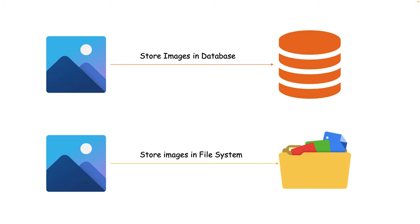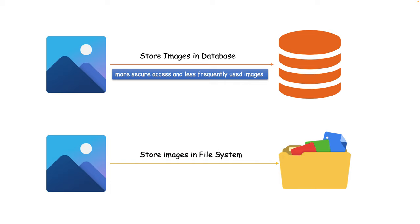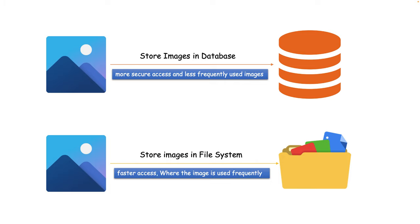You might have a question: when to use which approach? If you want more secure access and less frequently used images, then go with the database approach — though getting an image from the DB involves more steps and creates a delay. Getting an image from the server file system is straightforward, and the file system approach is preferred for faster access, like for web applications where the image is used frequently.